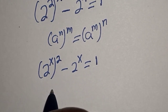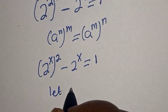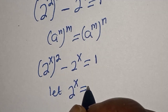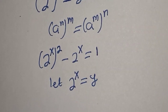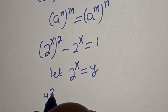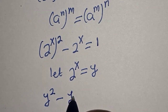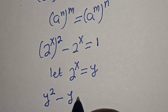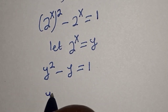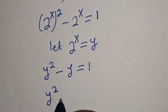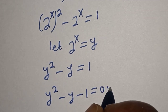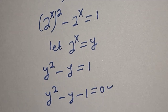Let 2 raised to the power x equal y. Then we have y squared minus y is equal to 1, which gives us y squared minus y minus 1 is equal to 0. This is a quadratic equation.